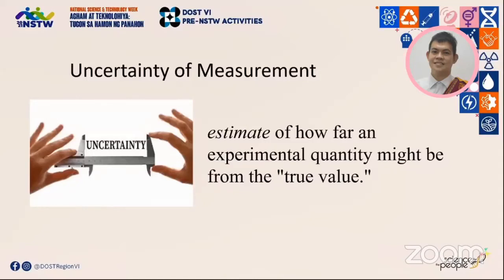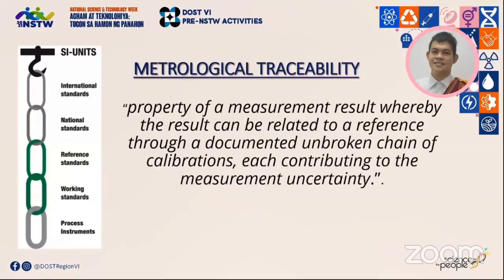Metrological traceability is a property of a measurement result whereby the result can be related to a reference through a documented and unbroken chain of calibrations, each contributing to the measurement uncertainty. Traceability is established through reference numbers that connect calibration results back to the standards used for reference. These numbers allow each measurement made to be traced back to the international standard through an unbroken chain of calibrations. As calibrations move up the traceability chain towards the international standard — the SI — the tolerances become tighter and tighter.